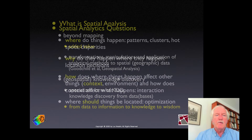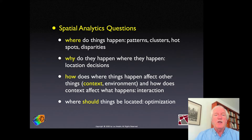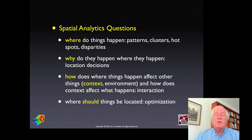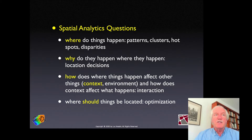What is spatial analysis involved with? Four big topics: first, where do things happen — finding patterns, clusters, hot spots, disparities. Second, why do they happen where they do — what are the causal mechanisms. Third, how does what happens in one location affect other locations — the concept of interaction, which is critical in spatial analysis. Fourth, the optimization component — for example, where should you put medical clinics or fire stations.